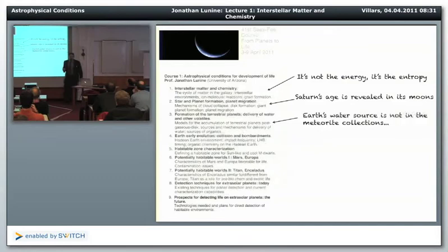So I'll talk about various models, but the conclusion that I'll come to is that the source of Earth's water is not represented by anything that's in our meteorite collections, which is kind of unfortunate. But at the moment, that's what I'm thinking. We'll move on then to the early evolution of the Earth, collisions and bombardments.